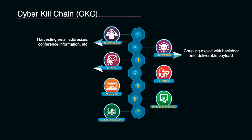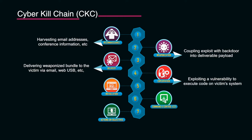The third phase is delivery. The attacker devises a method to deliver the payload to the target by using email, web, USB, or by convincing the target to click on something. That exploit with the backdoor is delivered to the victim in this phase, followed by exploitation, where the exploit exploits a vulnerability to execute code on the victim's systems and infrastructure. This then moves to installing malware on the target asset.